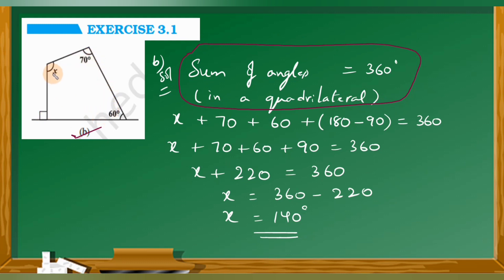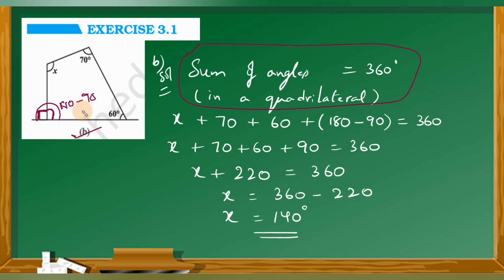So let us add x plus 70 plus 60 plus another angle. That angle is not directly given to us, so we need to find it — it forms a linear pair. In a linear pair the sum is 180 degrees. There is a 90-degree angle shown, so the other angle of the linear pair is 180 minus 90.